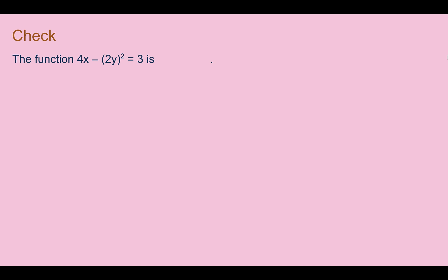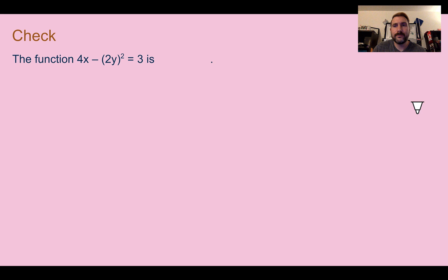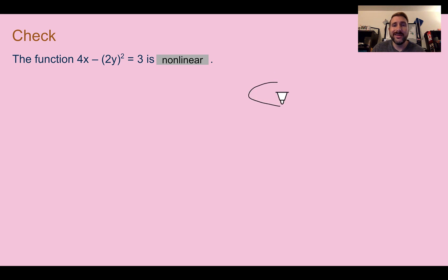Check your understanding: determine if the function shown is linear or nonlinear. You should have found that this is nonlinear. If you check on Desmos, the graph doesn't even pass the vertical line test, meaning it's not even a function at all — but it is nonlinear since the graph did not make a straight line.